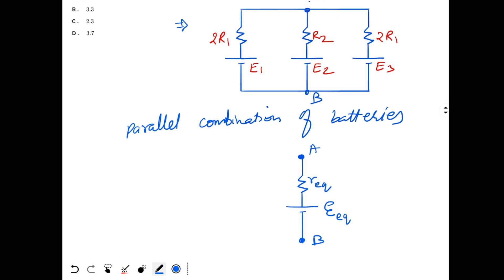Now, how do we calculate R_equivalent? R_equivalent will be calculated by using the parallel combination. So 1 by R_equivalent will be 1 by 2R1 plus 1 by R2 plus 1 by 2R1. This is equal to, it gives me R_equivalent equal to R1 times R2 divided by R1 plus R2.